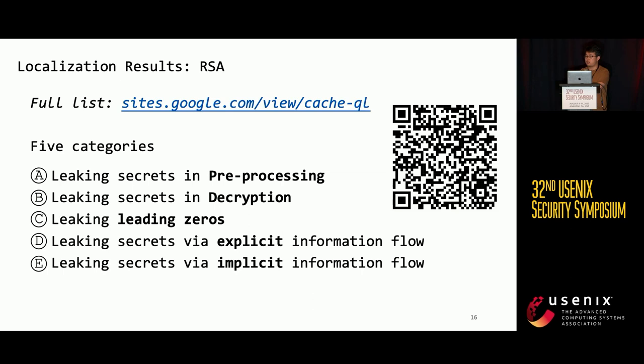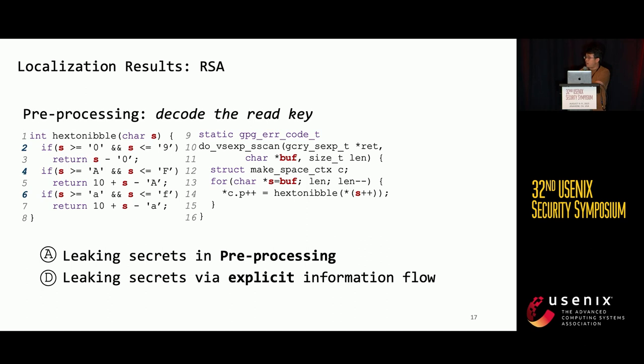The first category describes when the leakage occurs, and the last category describes how the secrets are leaked during program execution. We additionally list a third category: leaking leading zeros. In modern crypto software, big number computation often skips leading zeros for speed-up, and this optimization introduces a considerable amount of leakage. These five types of leakage exist throughout the whole life cycle of modern crypto software. For example, one preprocessing function decodes the secret key read from the user's file, and the control branch depends on each four bits of the secret key, causing considerable leakage.